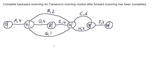In this video I'm looking at completing backwards scanning for this network, which represents Cameron's morning routine, after we've already done forward scanning. Forward scanning analyses the network and puts in the earliest start times in the left hand side of each of the nodes. We are now going to perform the backwards scanning, which works in the opposite direction. Forward scanning started at time zero and worked out the earliest time we can start and finish the project.